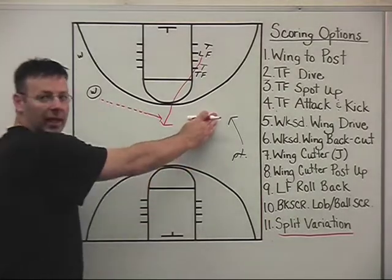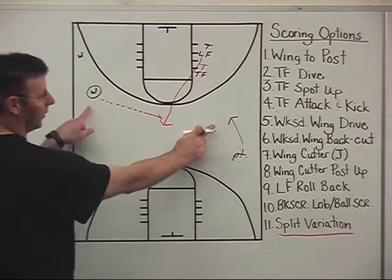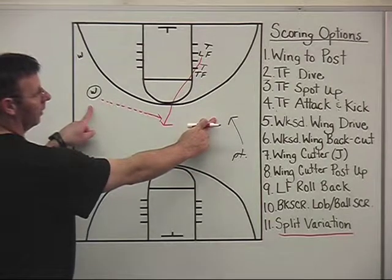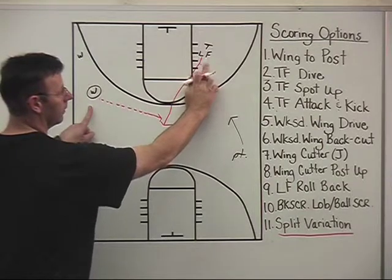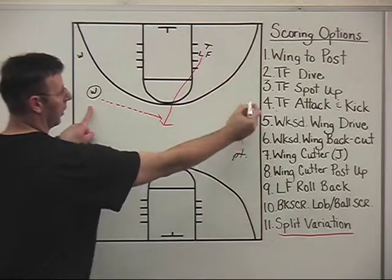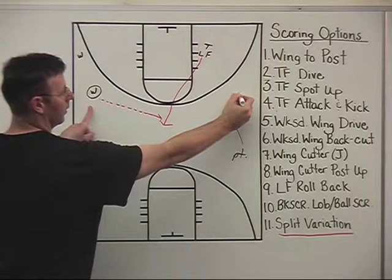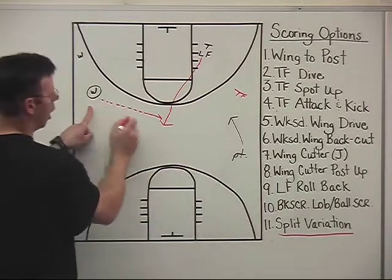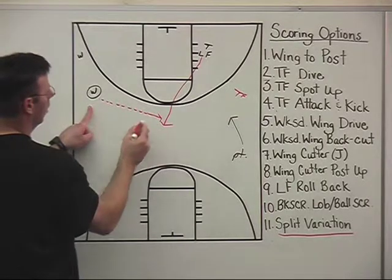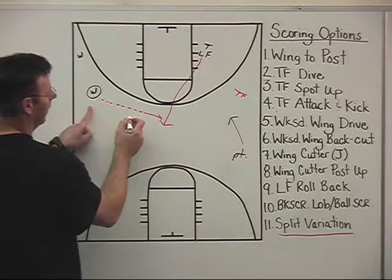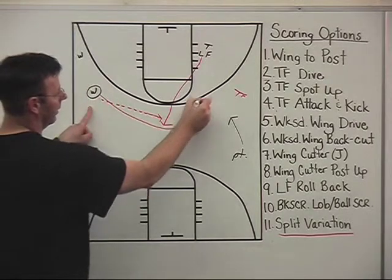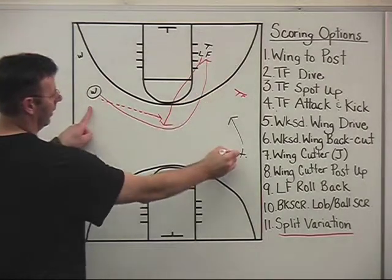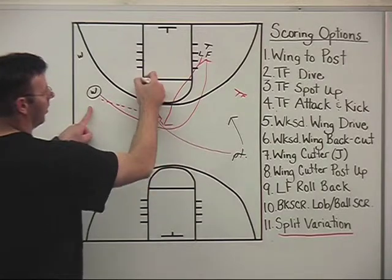Our point guard has now stepped into play here, so we have a little balance with our wing and our point guard. We go ahead and empty out our trail forward after that cut. We're going to end up with a trail forward right in that area. Ball in the high post. We're now running a split — a give and go split with our wing and our point into the post area.